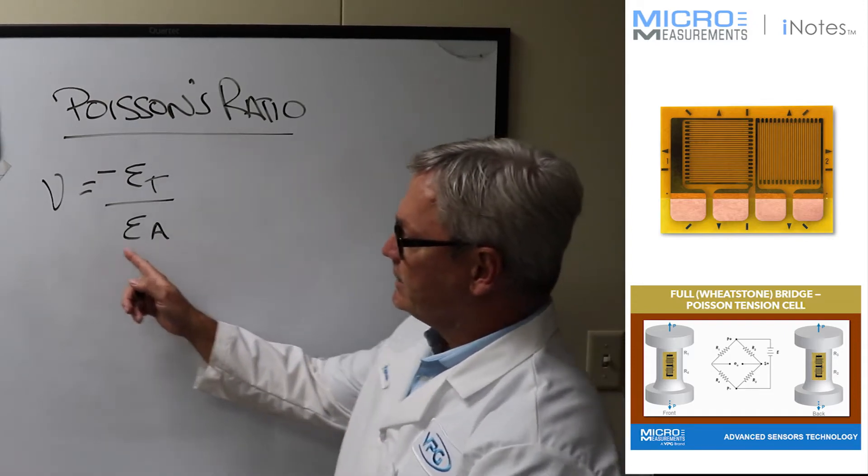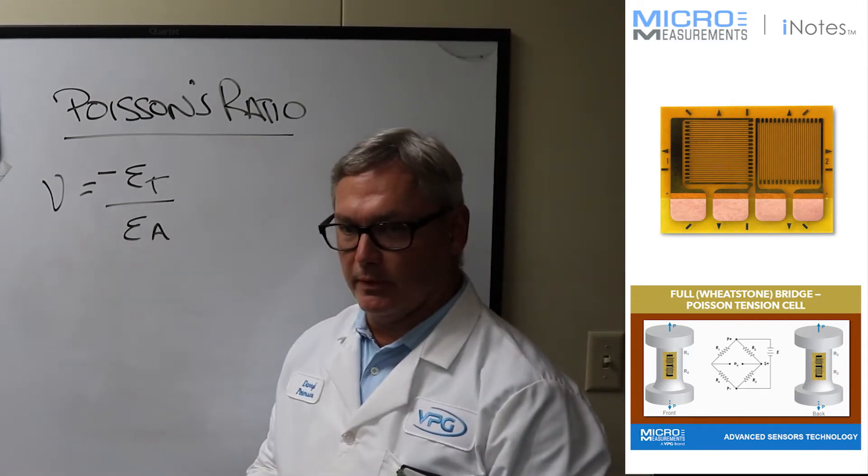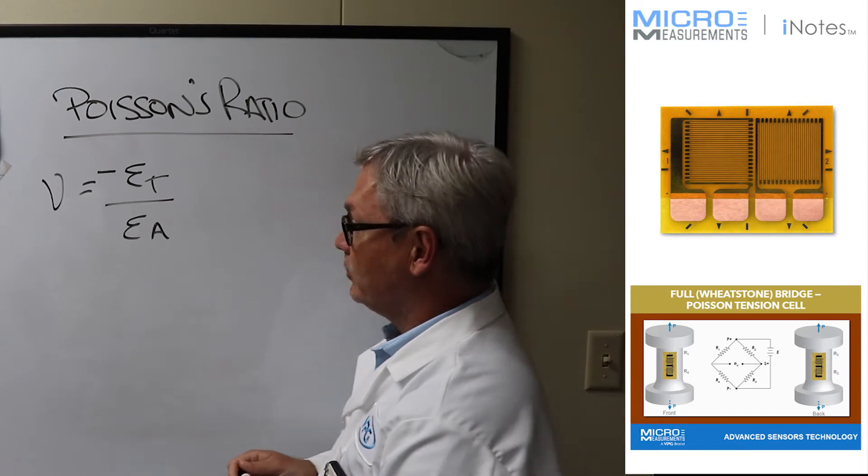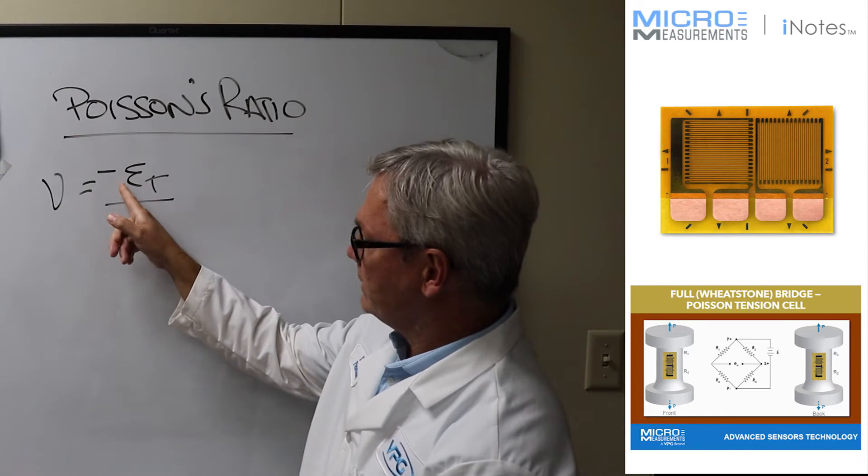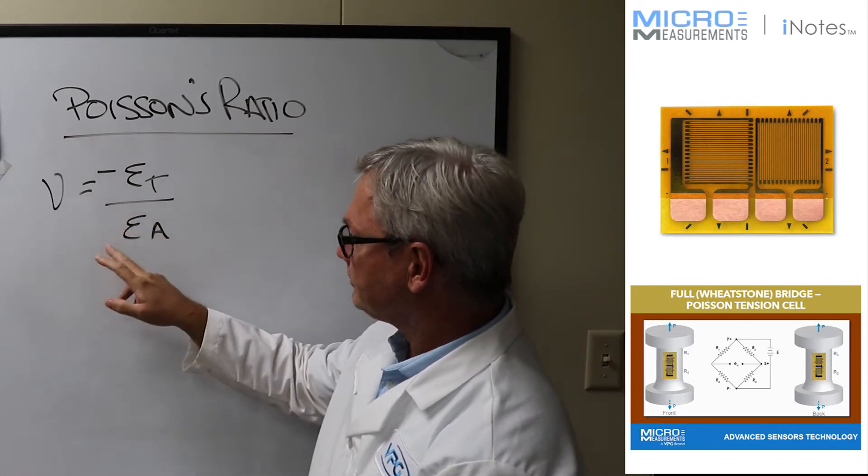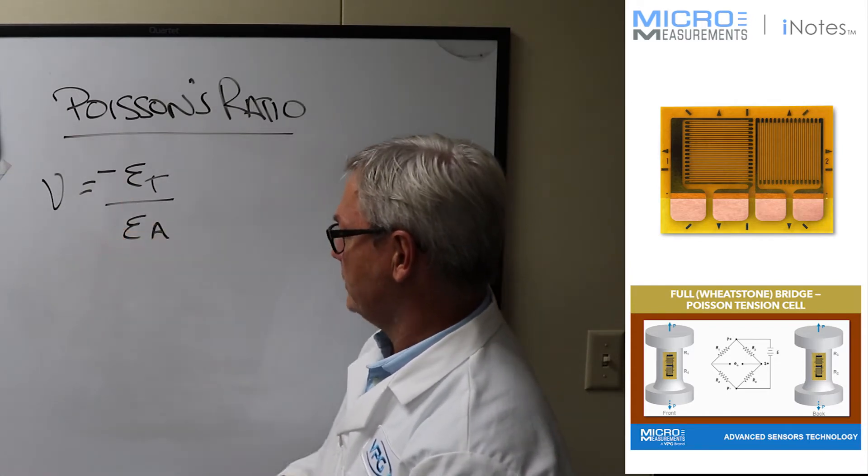The reason for this is that the vast majority of materials, and I would say probably 99.99% of them, are going to have a Poisson's ratio where the transverse strain is going to be opposite in sign of the axial strain.